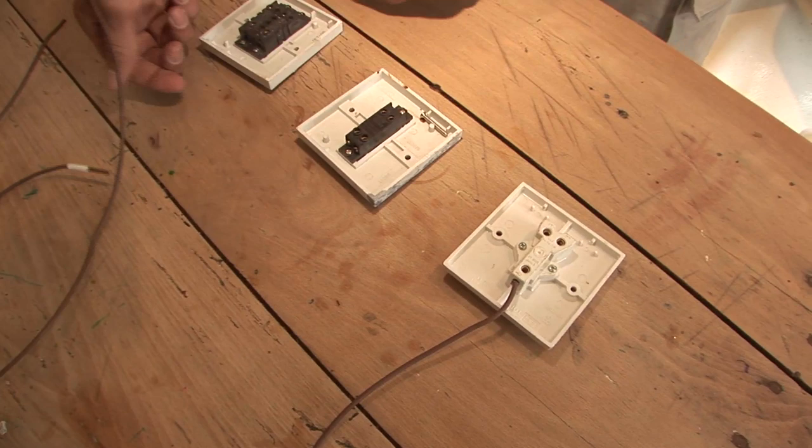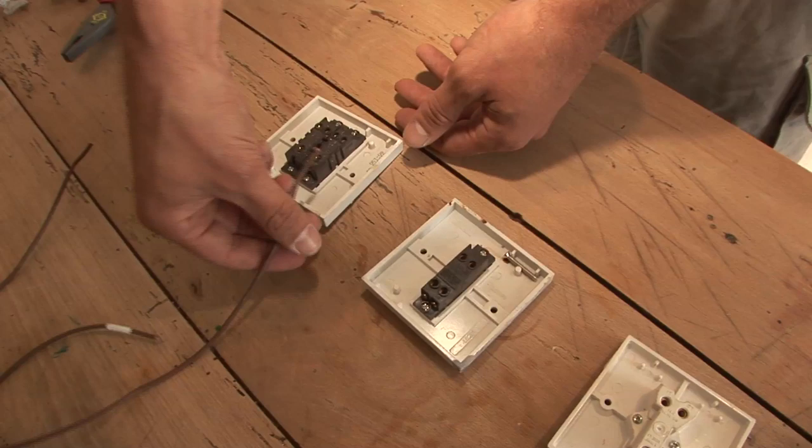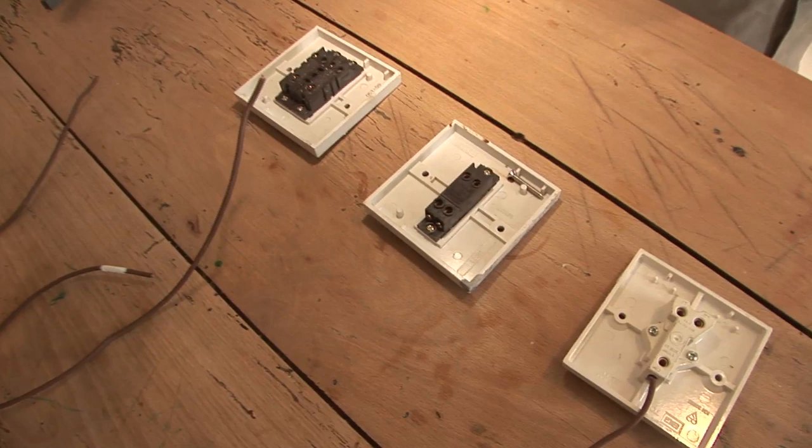We'd then have the switch wire that would leave by this point here, which would be noted as the C and the C, the common. That would go to the light, so that would be switching the light through the switches.